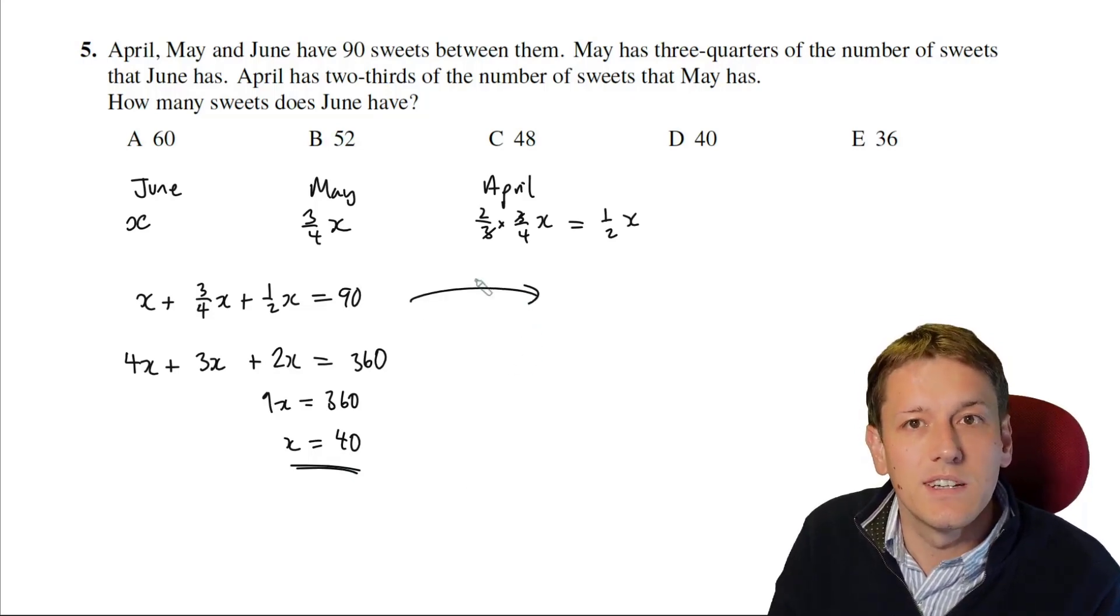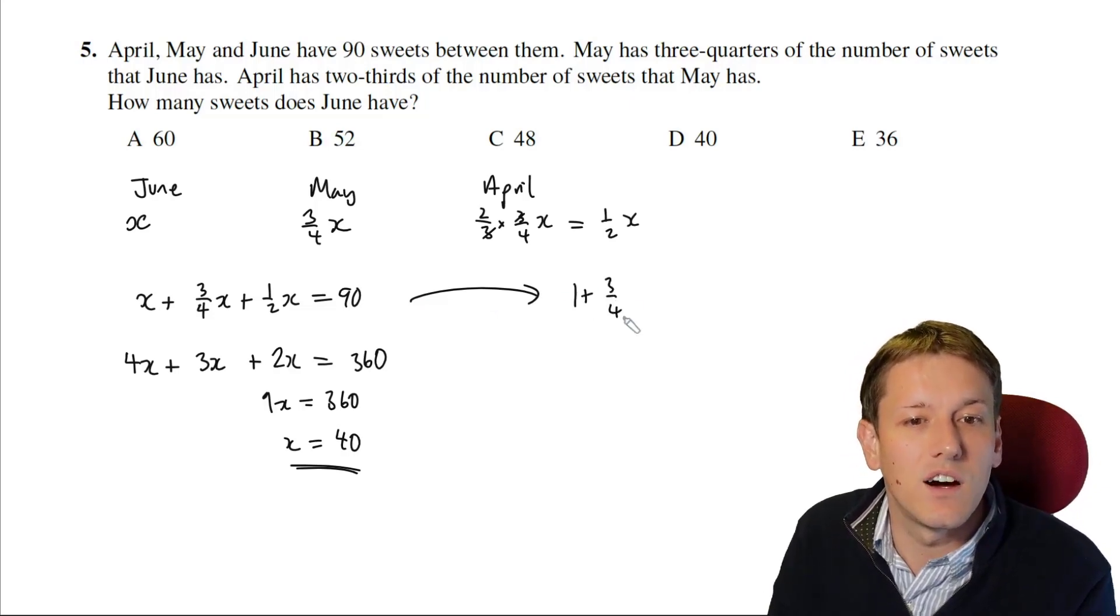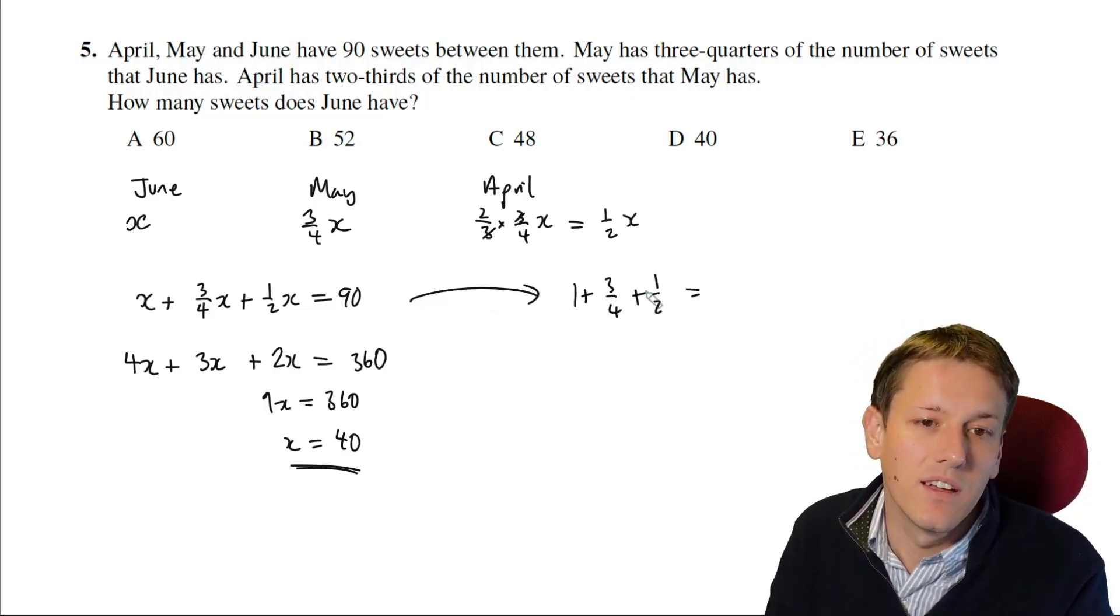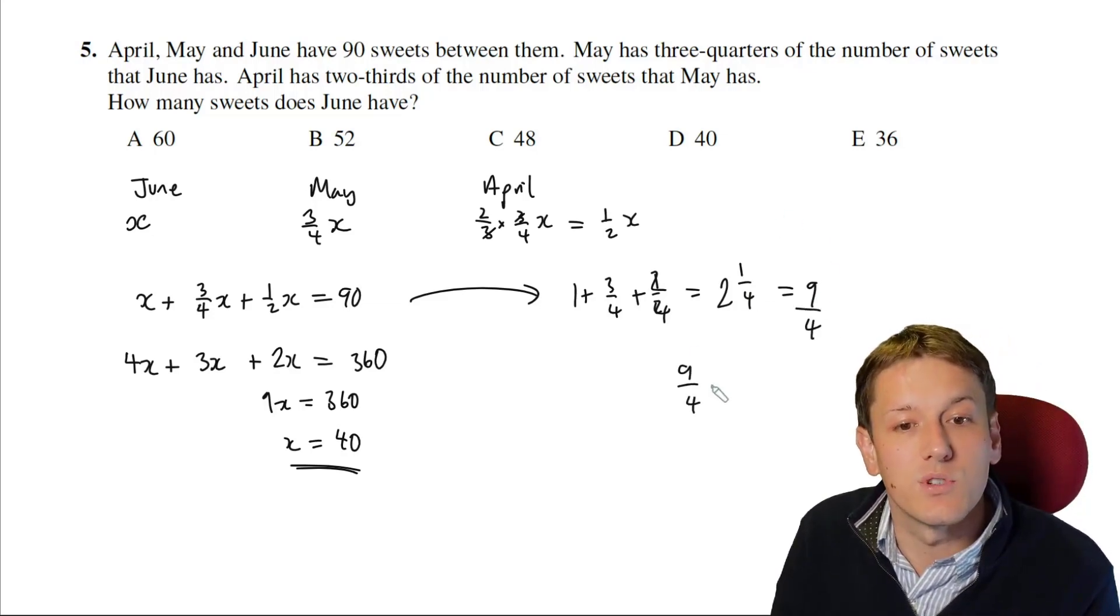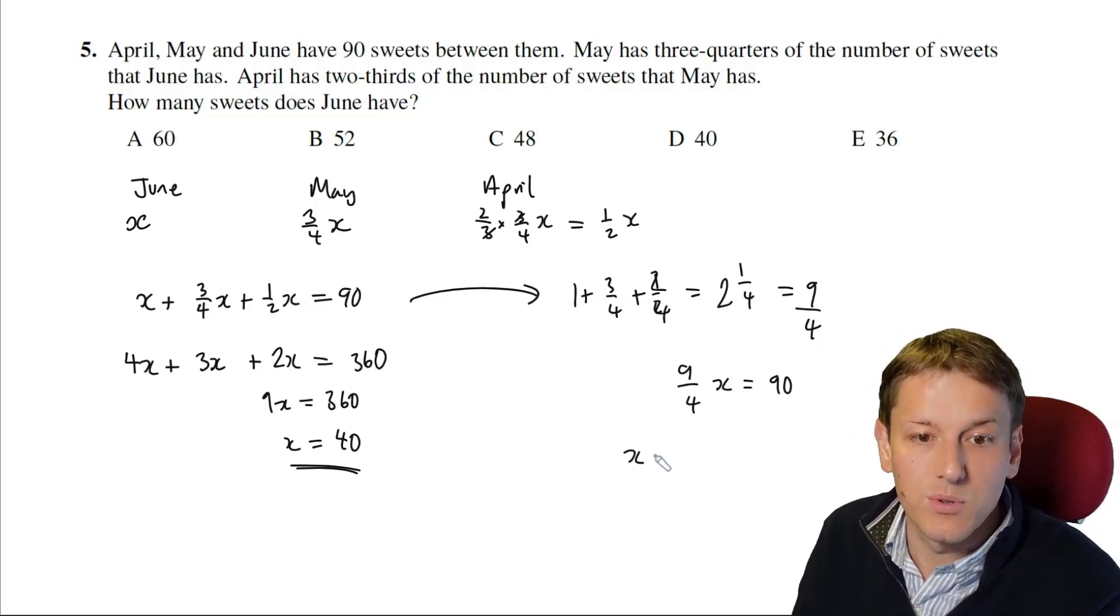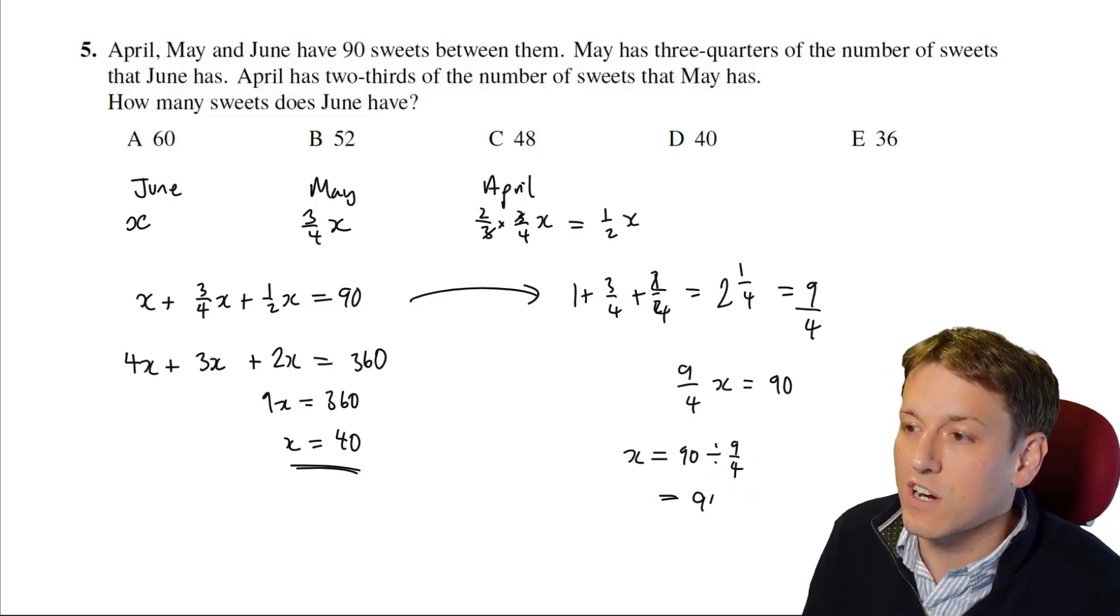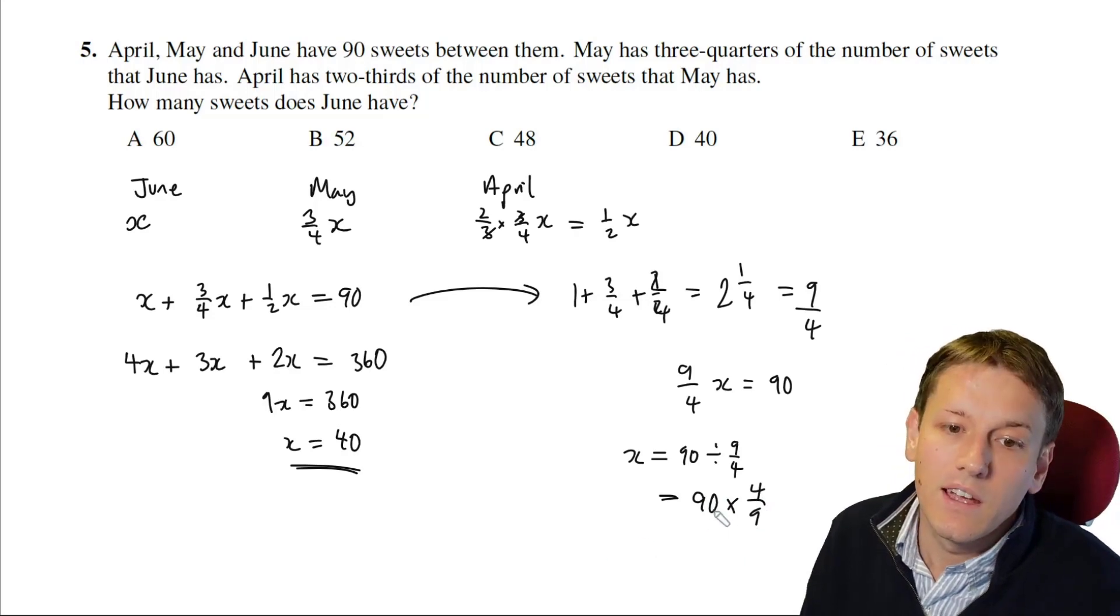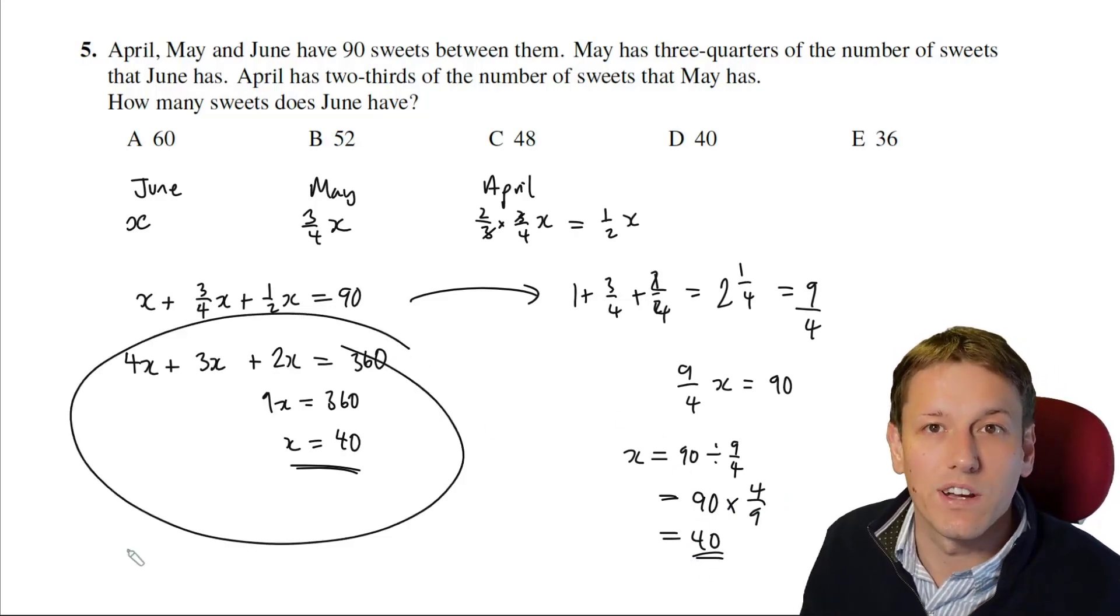Of course I think a lot of people will do it this way, where we add the fractions together instead, so I've got 1 and 3 quarters and a half X, and if I add those together, a half is 2 quarters, so I've got 1 and 5 quarters, or 2 and a quarter, which I could write as 9 over 4, so I could also write 9 over 4X equals 90, and now I've just got to do X is equal to 90 divided by 9 over 4. Dividing by a fraction, we turn it upside down and multiply, so 90 over 9 is 10, 10 times 4 is 40, and I get the same answer as before, but I do think this method really simplifies things.